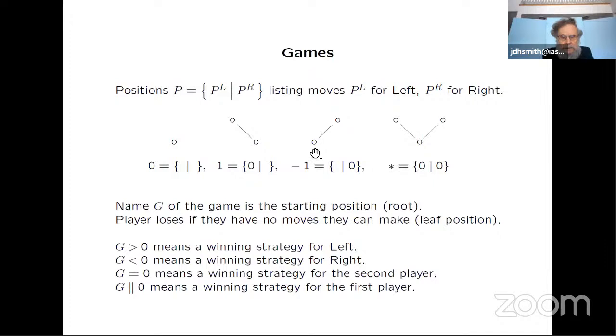Now if left were to start of course they would have no moves so they would lose. If right were to start they have a move and they can then put left in the position of having to play from zero and therefore losing. So that game has a negative value of negative one and that's a winning strategy for right. So these three games we'll actually define later. We'll see those are numbers for a simple technical reason. G equals zero, that's the first game we looked at. In general g equals zero means a winning strategy for the second player.